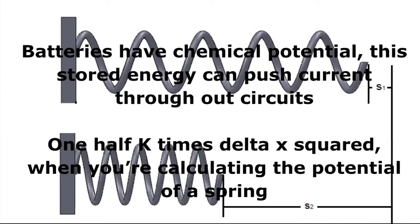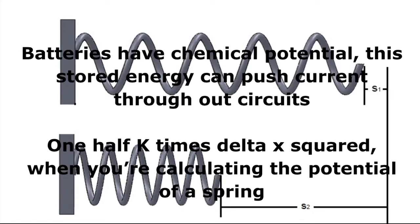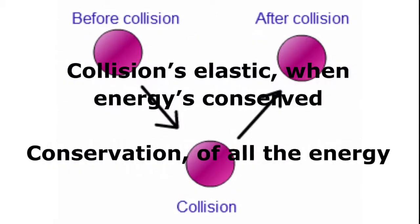Batteries have chemical potential. This stored energy can transfer throughout circuits. One half K times delta X squared, when you're calculating the potential of a spring.